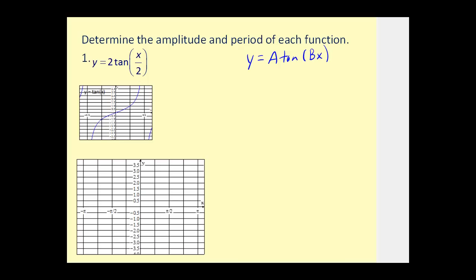Let's start by finding the period of y = 2tan(x/2). The period is pi divided by b. Here b is equal to one half, so pi divided by one half equals pi times two — giving us two pi radians for the period. The basic tangent function is graphed between negative pi over two and pi over two, but since the period is now two pi, we extend from negative pi to pi radians, giving vertical asymptotes at negative pi and pi.